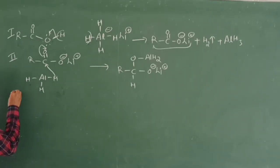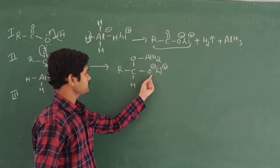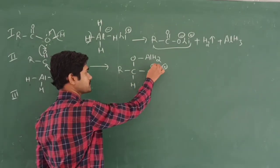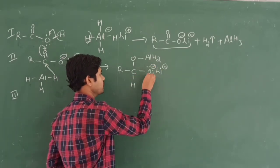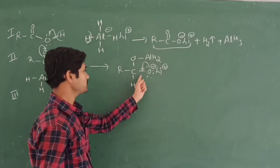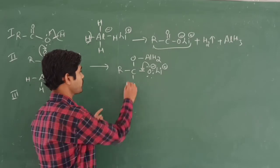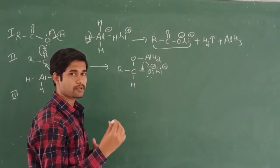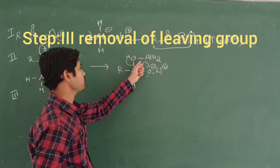The third step involves removal of a leaving group. The oxygen carries a negative charge, making the carbon unstable. The electrons form a double bond, and when the double bond forms, the carbon becomes pentavalent — so the leaving group is removed. Because oxygen has greater electronegativity than carbon, it pulls electron density toward itself, driving removal of the leaving group.